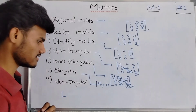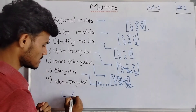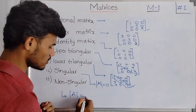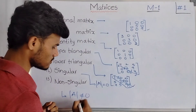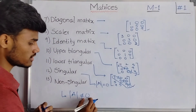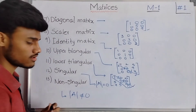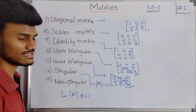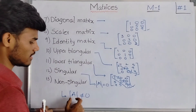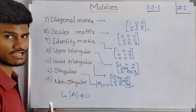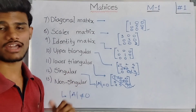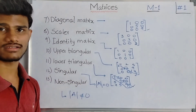Now coming to non-singular matrix: the determinant of A is not equal to 0, that is det(A) ≠ 0. When this condition is satisfied, then matrix A is said to be a non-singular matrix. These are the types of matrices.